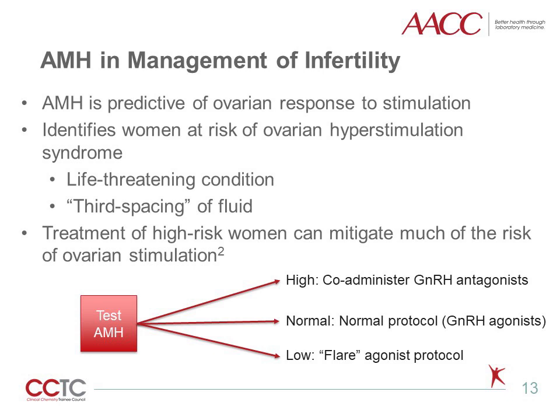Identification of women at risk for hyperstimulation and altering their treatment accordingly can reduce much of the risk associated with in vitro fertilization. A sample protocol for oocyte harvest stratifies women based on their AMH concentrations. A normal AMH concentration receives the normal course of stimulation using gonadotropin-releasing hormone agonists. A low AMH concentration predicts a poor response and a modified protocol known as a FLARE protocol is employed, using several microdoses of a gonadotropin-releasing hormone agonist to prevent premature LH surges. A high AMH concentration predicts a patient who is likely to over-respond; long-acting gonadotropin-releasing hormone antagonists can be given to titrate the response and reduce the likelihood of ovarian hyperstimulation syndrome.